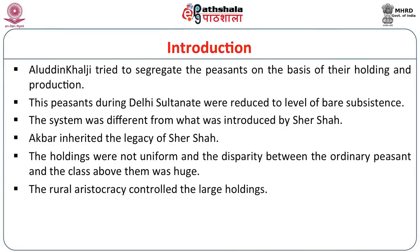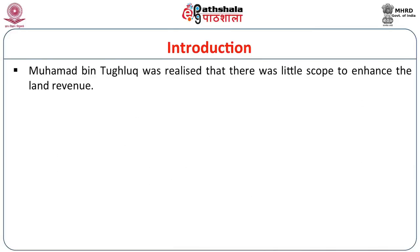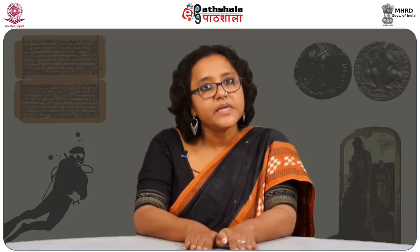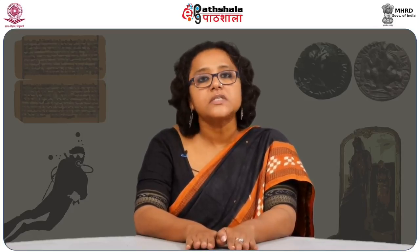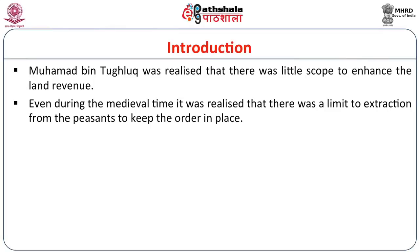The rural aristocracy controlled large holdings and paid very little revenue. During the time of Muhammad bin Tughluq, it was realized that there was little scope to enhance the land revenue as the revenue was already high. The royalty tried different means of increasing revenue but could not hike the tax anymore, as that could have led to large-scale upheaval of the peasantry. During the medieval period, it was realized that there was a limit to extraction from the peasant that would keep the society in order.